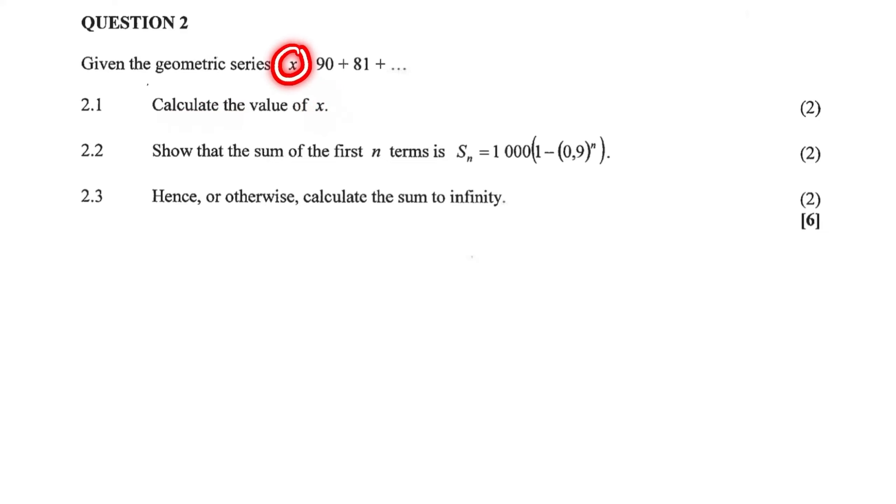Now, x is the first term in this geometric series. But what we know is that in a geometric series, we have a constant ratio between terms. And to find that constant ratio, we'll say term 3 divided by term 2 is equal to term 2 divided by term 1.